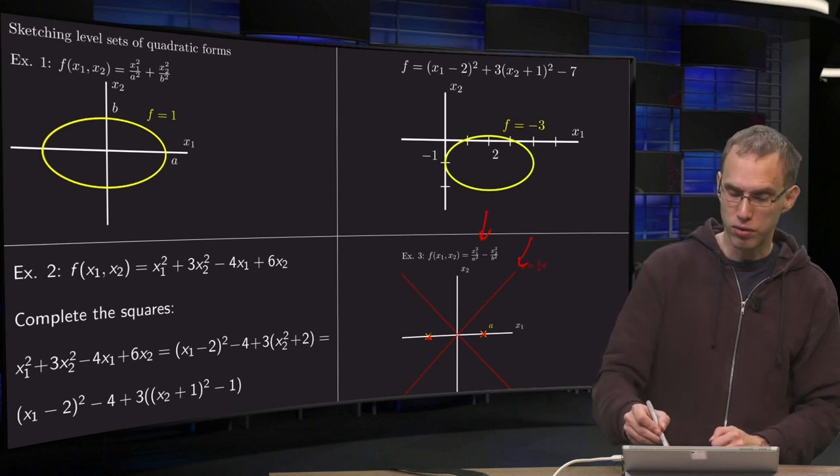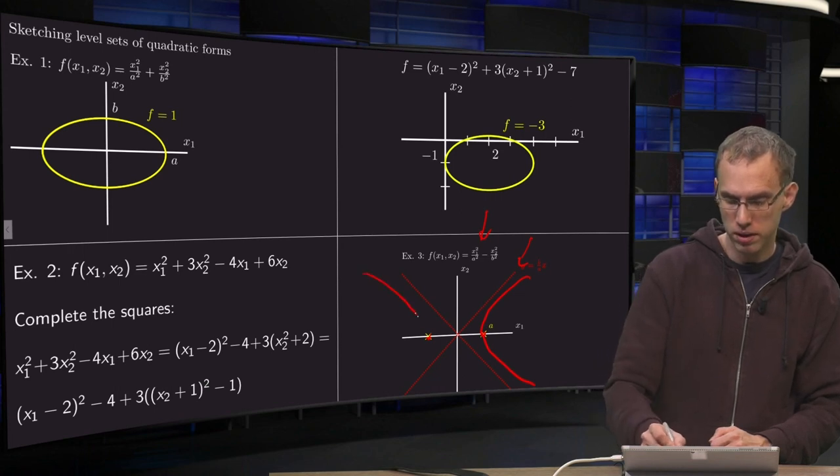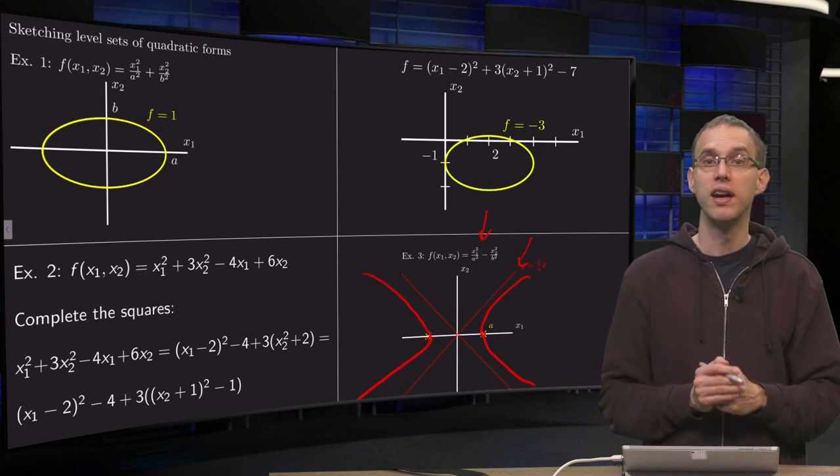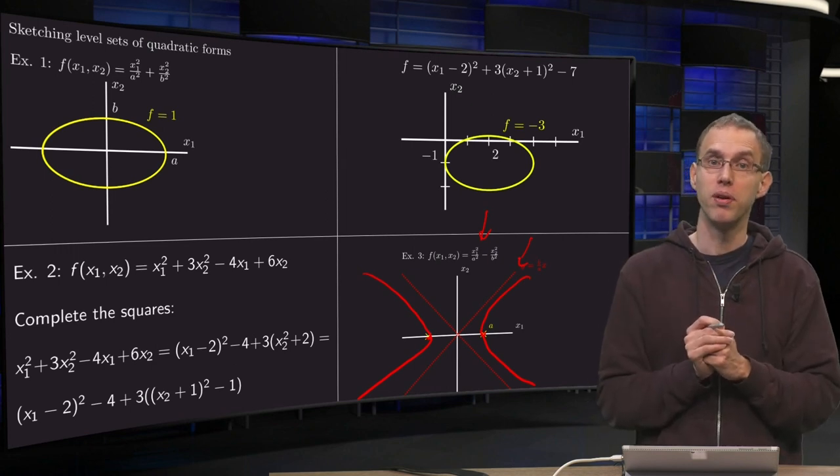So how do the curves, how do the level sets look like? Something like this over here, something like that over here, and symmetric. So our level sets in this case will become hyperbolas.